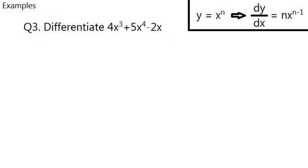How? Well first, you do the same thing, just identify different terms, which is 4x cubed, 5x to the power of 4, and minus 2x.